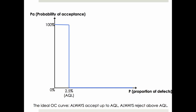Now, in an ideal world, it wouldn't be a curve — it would be a step function. You would set your AQL and say: I want to accept everything below 2.5% — I want 100% chance of acceptance. But if it's above 2.5% of defects, I want to reject — 0% acceptance. But of course, with random sampling inspections, we're not going to be able to replicate that.